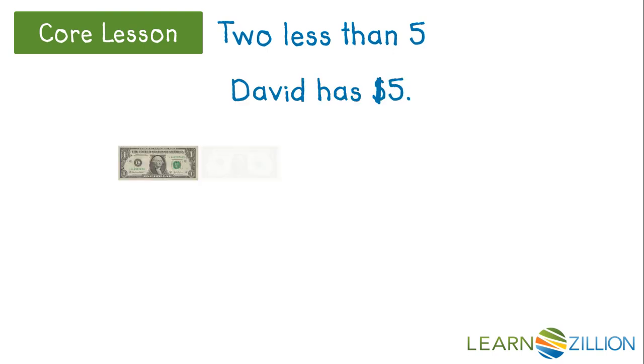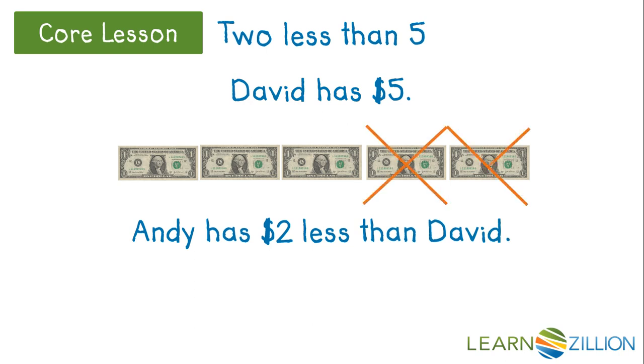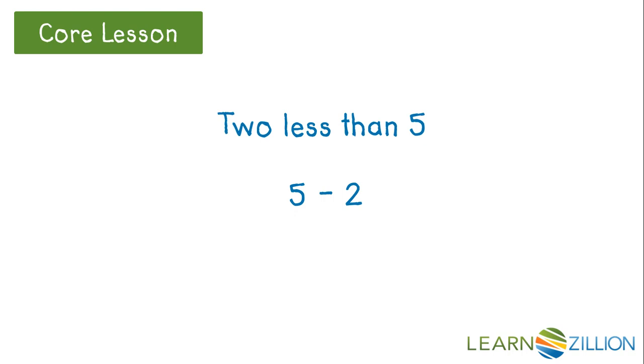David has $5. Andy has $2 less than David. We can cross out those $2 that Andy doesn't have and we have $3 left. So we can take 2 less than 5 and write it as 5, our original $5, minus 2. 2 less than 5 can be written as 5 minus 2.